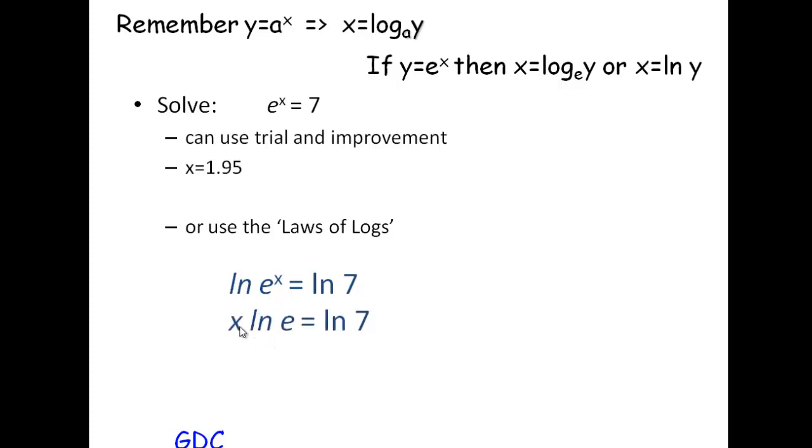Well ln e to the x is the same as x times ln e. If we remember in base 10, log to the base 10 of 10 is 1. In fact log to the base a of a is 1 because a to the power of 1 equals a. We remember here then log to the base 10 of 10 equals 1 because 10 to the power of 1 equals 10.